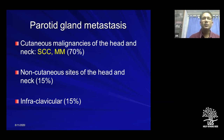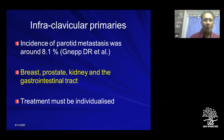Parotid gland metastasis is another important entity. In cutaneous malignancies of the head and neck, the parotid nodes become the first echelon nodes. Metastasis from non-cutaneous sites also occurs in about 10–15% of cases, and very rarely there may be an intraparotid primary. The most common sources of intraparotid primaries include breast, prostate, and the GI tract.